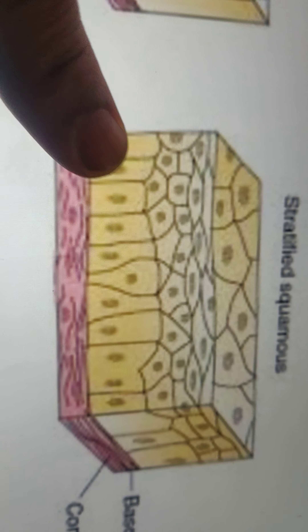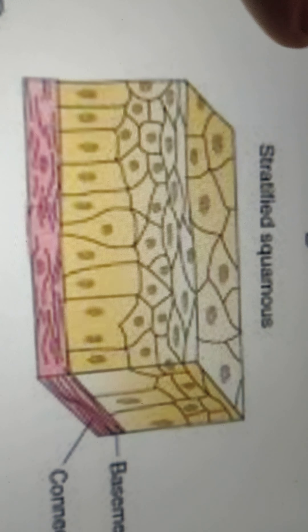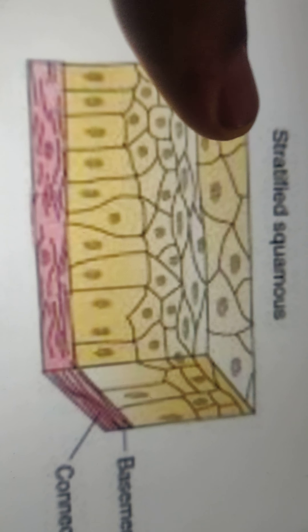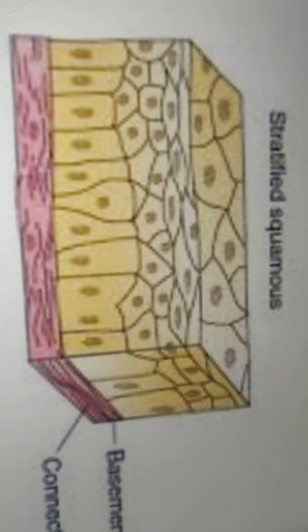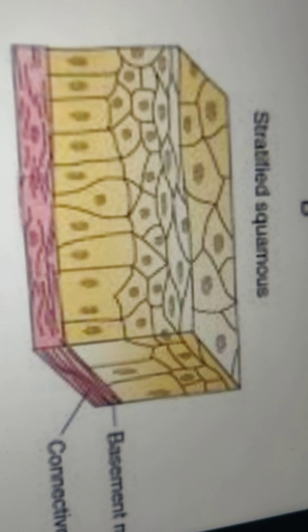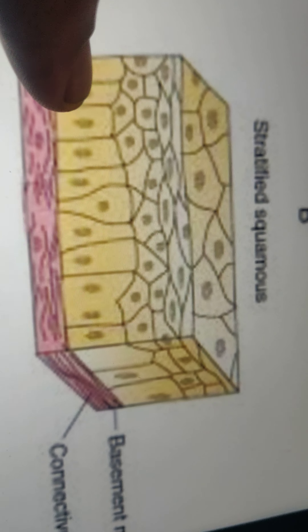In the stratified squamous epithelium, you can see several layers of cell arrangements. There are columnar, cuboidal, and squamous cells all present — there is no single particular layer of one cell type. All the cells are mixed together.